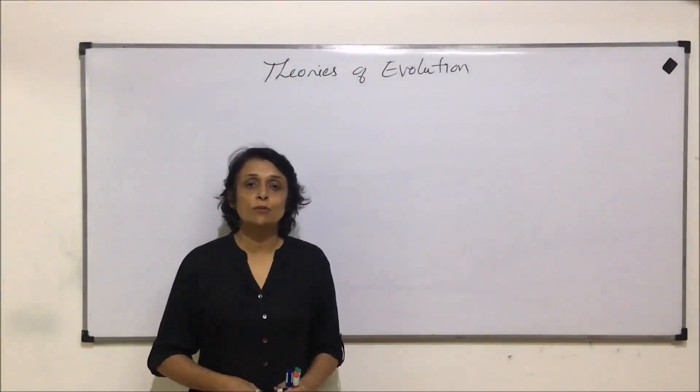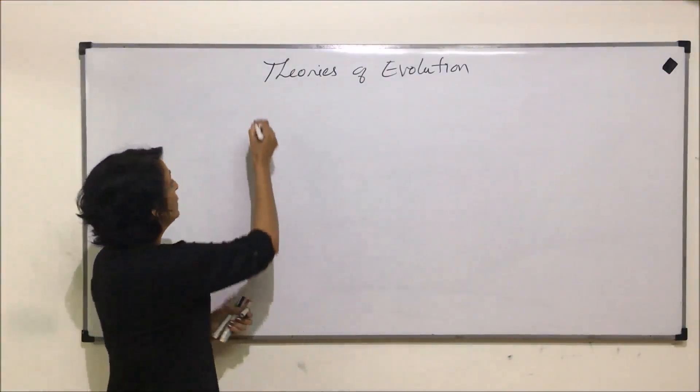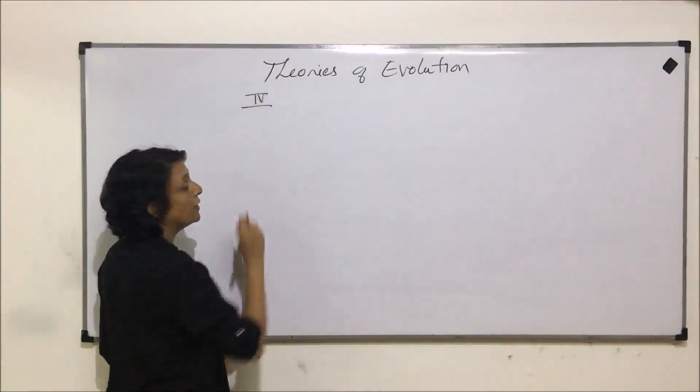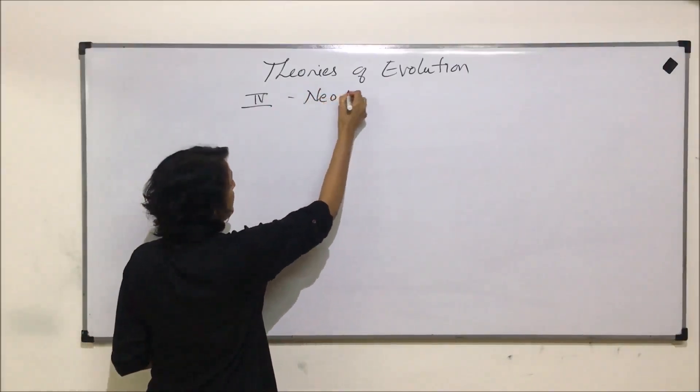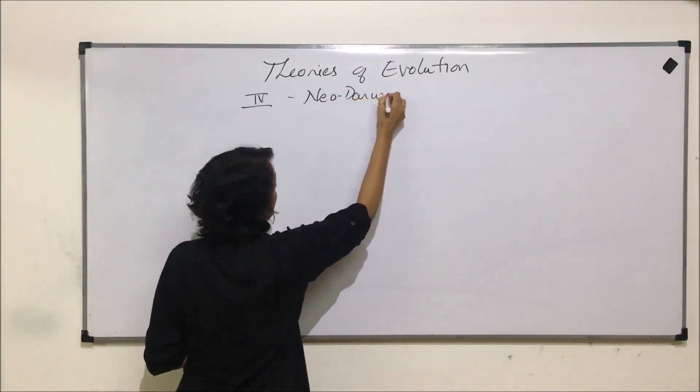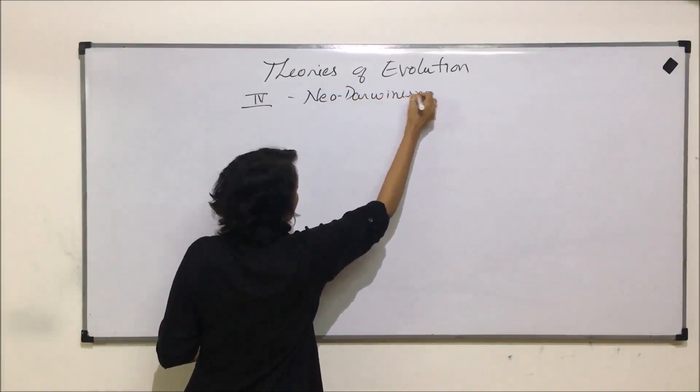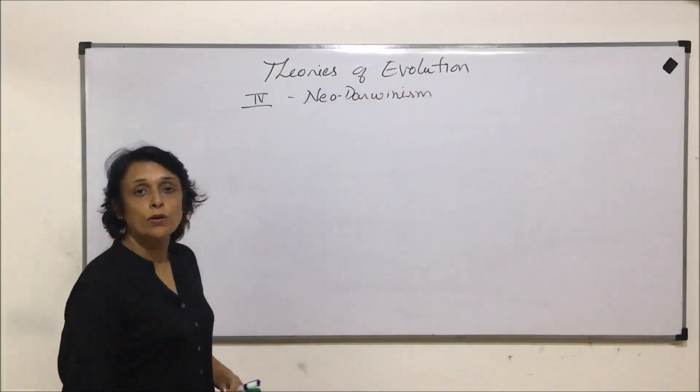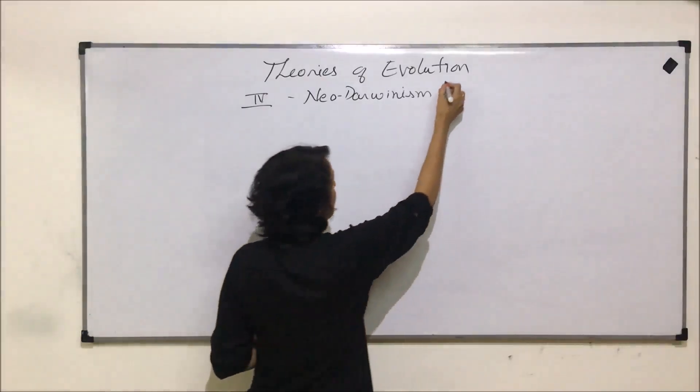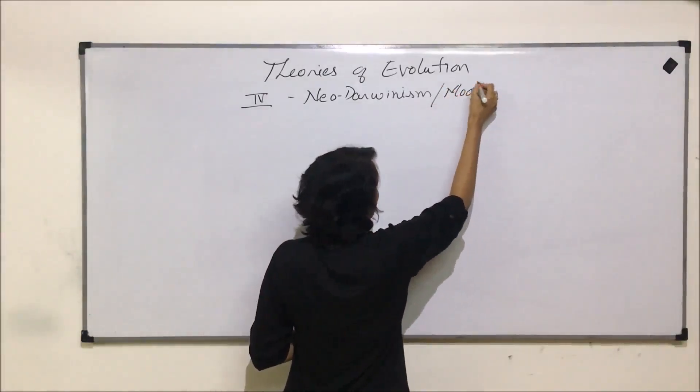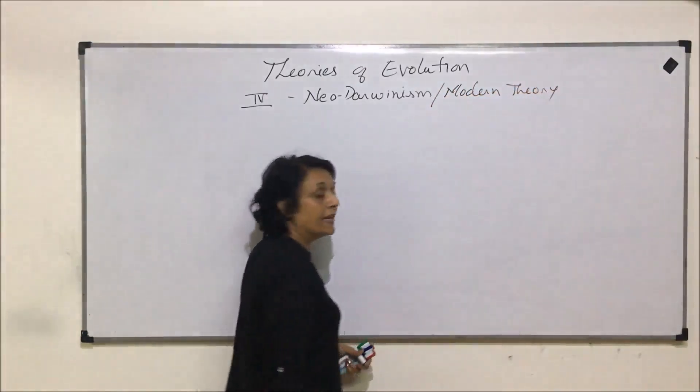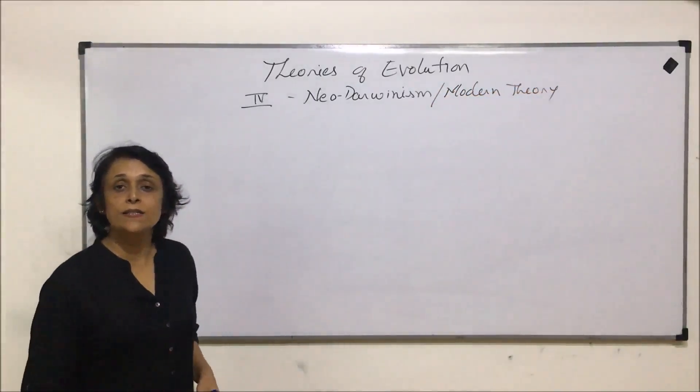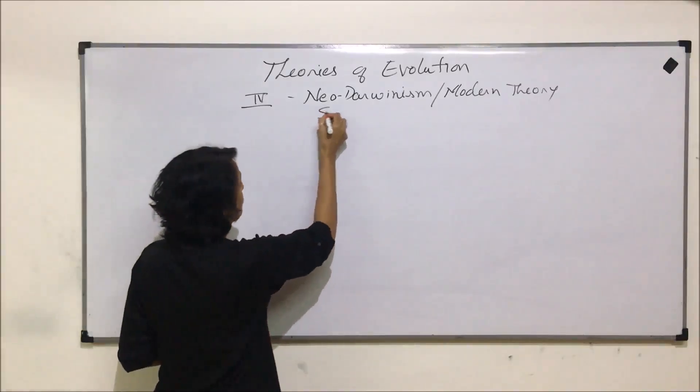In this video we'll talk about the last theory, the fourth theory of evolution, and that is known as Neo-Darwinism. This theory is also called the Modern Theory of Evolution and it is also known as Synthetic Theory of Evolution.